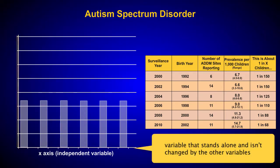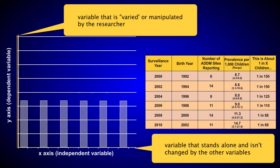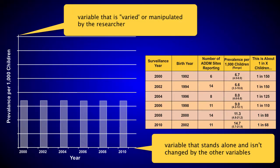While the y-axis, or the vertical axis, displays the dependent variable. The number of children with ASD is dependent on the year. The year doesn't change to match the number of children with ASD. This means the year is the independent variable and goes on the x-axis, and the number of children with ASD is the dependent variable and goes on the y-axis.